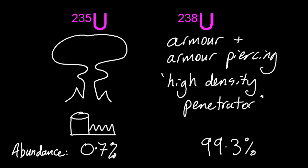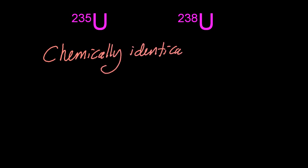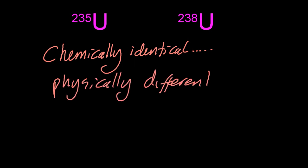Chemists can't set those apart. There's no chemical experiment that will split them up — the protons and electrons are the same. We have to rely on a physical experiment. They're chemically identical: same number of protons, same number of electrons. But physically they're different, because those no-charge neutrons that have mass are going to change the physical properties.